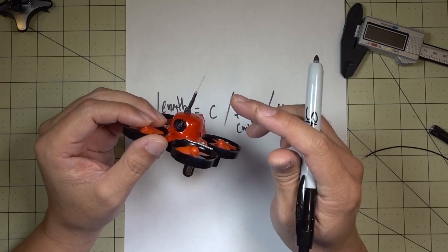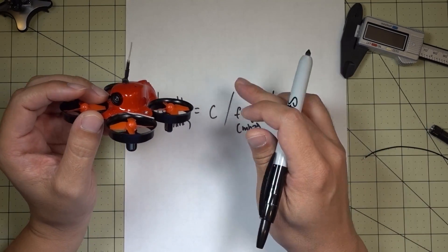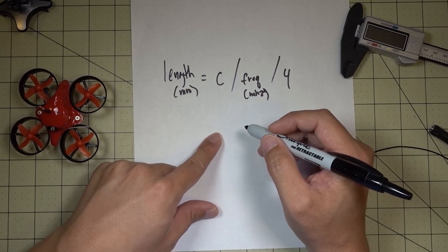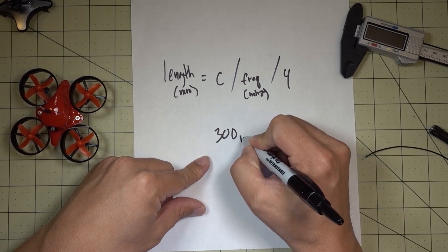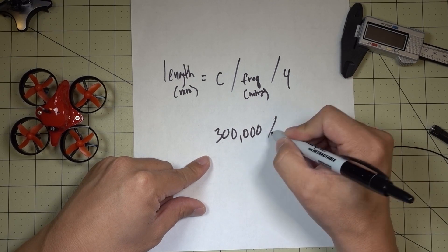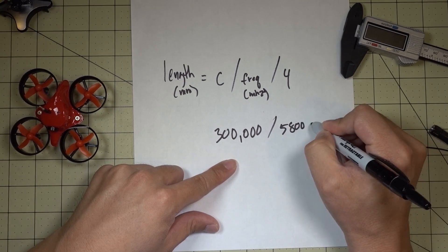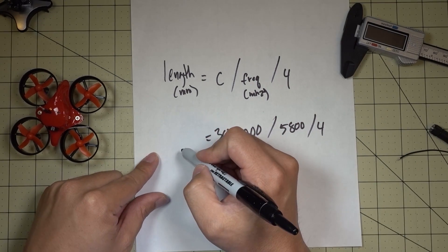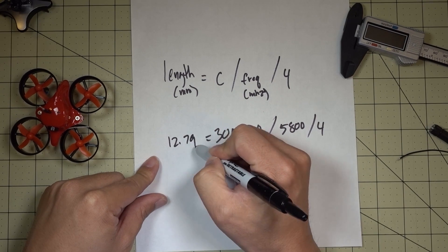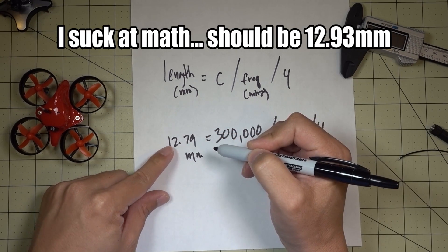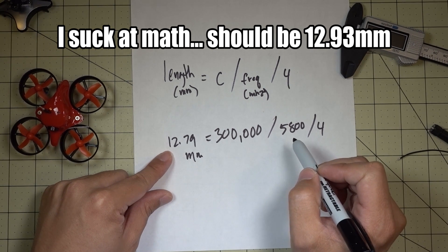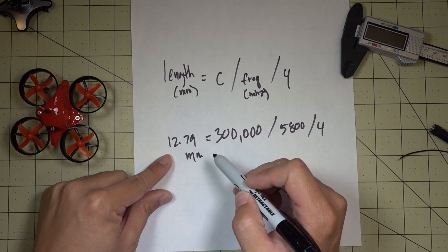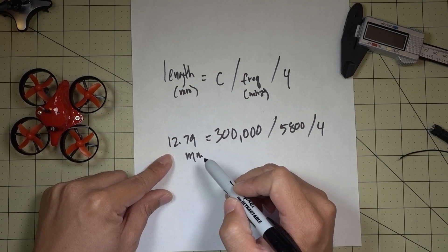The reason they use 4 is pretty much all these whip antennas are using what's called a quarter wave dipole. So it's a quarter of the frequency length of the transmission of this frequency. If I plug in the numbers here, C is the speed of light, which is 300,000 meters per second, and you're going to divide it by 5,800 megahertz, and you're going to divide that by 4. If you plug that into a calculator, it's going to give you 12.79 millimeters. So that's what you want. If you want an antenna that's going to give you optimal transmission at 5,800 megahertz, you want an antenna that's 12.79 millimeters.